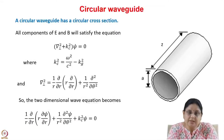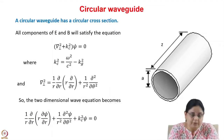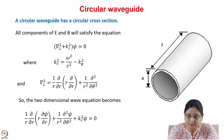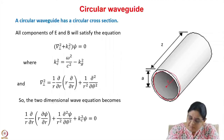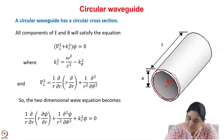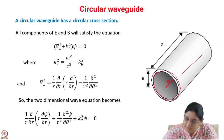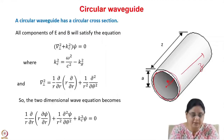Next is the circular waveguide. A circular waveguide has a circular cross section. We have boundaries for all theta and at r equal to a, where a is the radius. This is the radial direction and it is free to propagate in the z direction.